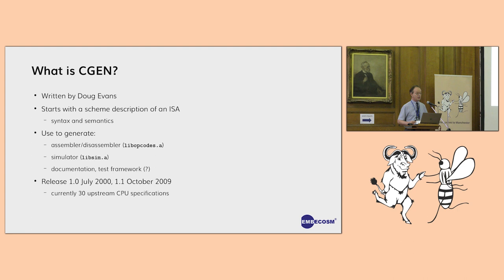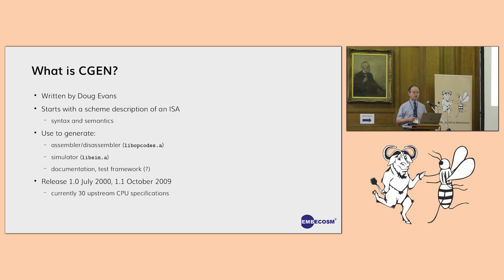So what is CGEN? Written by Doug Evans - I believe it was his MSC project. The idea is to take a description of an ISA captured in Scheme, a dialect of LISP, capturing both the syntax and the semantics of the instruction set, and use that information to generate an assembler, disassembler, simulator, documentation, and even a test framework. I'm going to look at this using RISC-V as an example, partly because we've commercially been doing a lot of work implementing the entire RISC-V instruction set in CGEN.